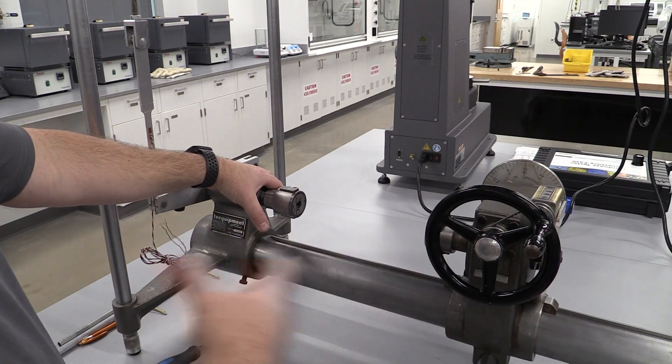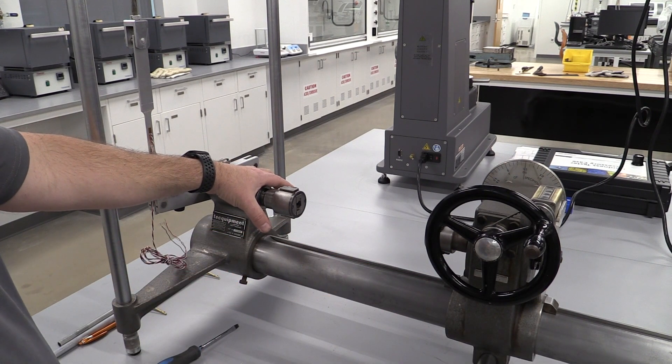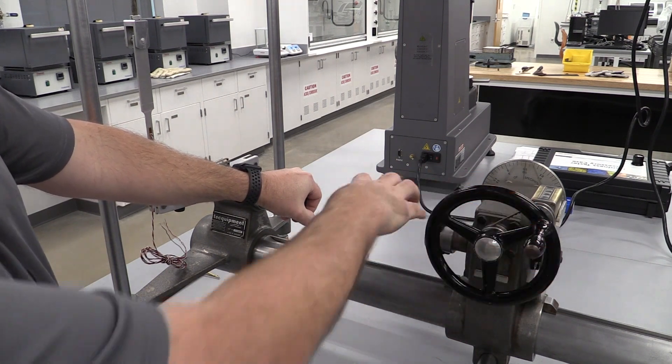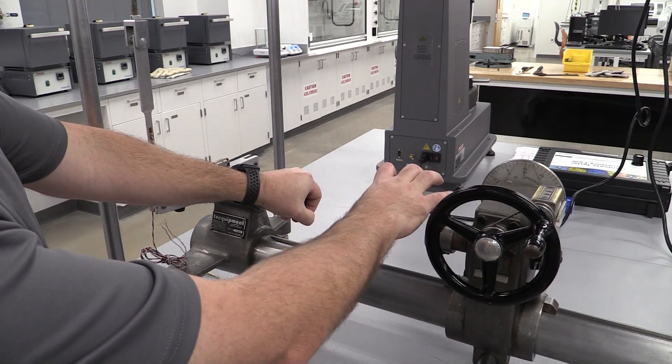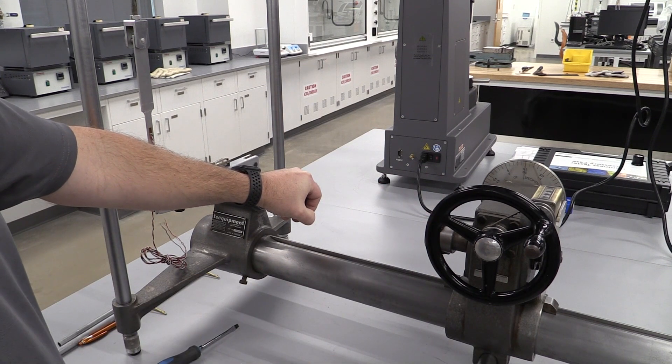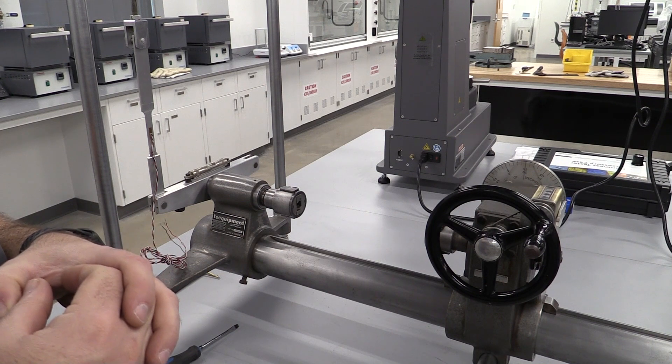We're gonna utilize this wonderful test stand right here, and this test stand is gonna allow us to hold this in solid, turn this wheel, and put a torque, a twist on that part, and we're gonna be able to measure the strain using that strain gauge. That's the basics of what we're gonna do with this lab.